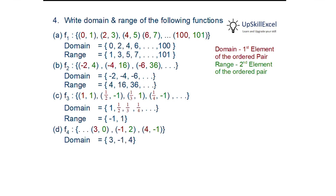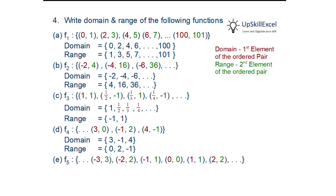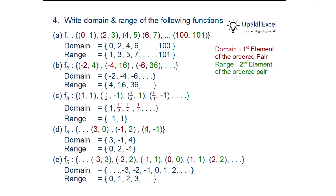For the fourth case, the domain is {3, −1, 4} and the range is {0, 2, −1}. For the fifth case, the domain includes both negative and positive values: {−3, −2, −1, 0, 1, 2}, but the range is limited only to non-negative numbers: {0, 1, 2, 3}.